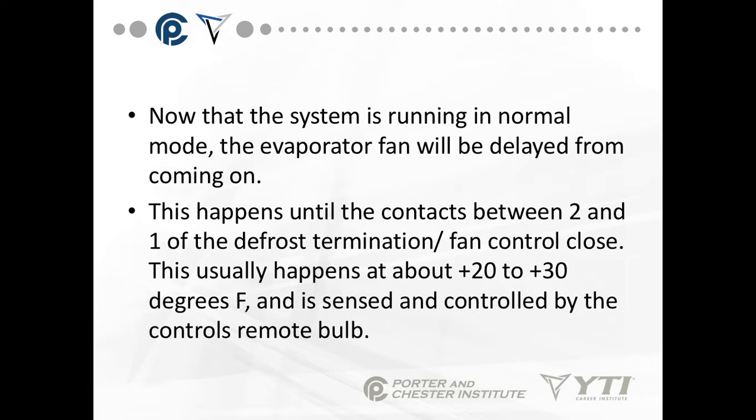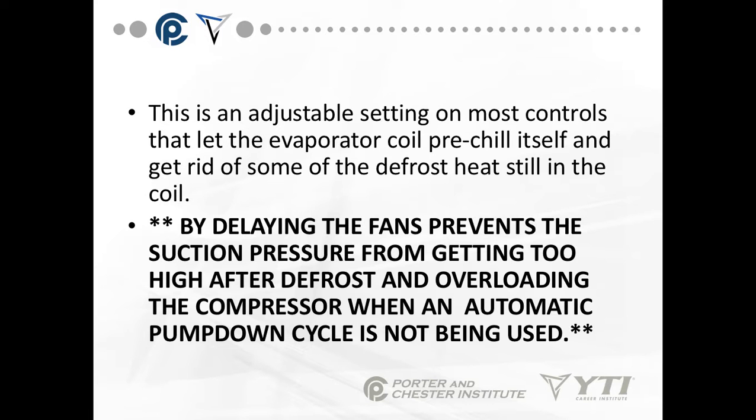Now the system is back running in normal mode. The evaporator fan will be delayed from coming on because the switch in the heat-sensitive defrost termination control is still in position 2 to 3. Until contacts 1 and 2 of the defrost termination fan close, the fan will not come on. This usually happens between 20 to 30 degrees Fahrenheit, controlled by the remote bulb. This is an adjustable setting on most controls that lets the evaporator coil pre-chill itself and dissipate some of the defrost heat. By delaying the fans, it prevents suction pressures from getting too high after defrost and overloading the compressor when an automatic pump-down system is not being used.